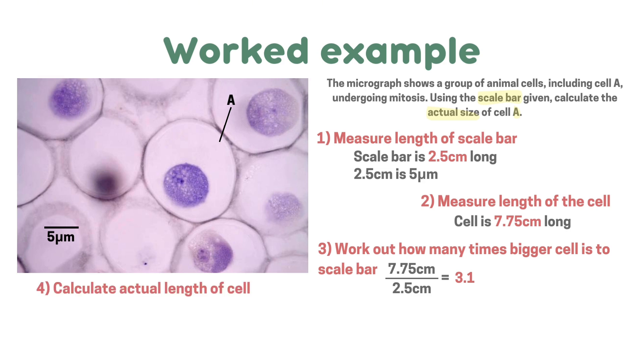Now we calculate the actual length of the cell. So all we do is 3.1 times 5 micrometres, which equals 15.5 micrometres. Now that is the actual length of the cell.